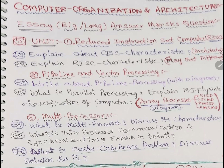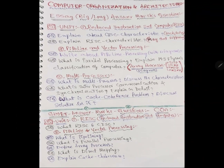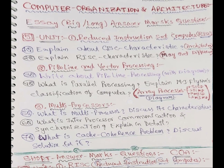I already completed the first unit important questions. Now I'm doing the fifth unit because in the fifth unit you will be asked direct questions — no twisted, no complicated questions. These are 15-mark essay questions as well as short mark questions. I have covered all the questions, including some I missed previously, by reviewing previous question papers, which sometimes include out-of-syllabus or subtopic questions.